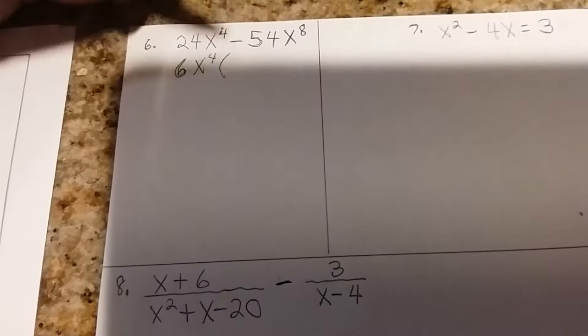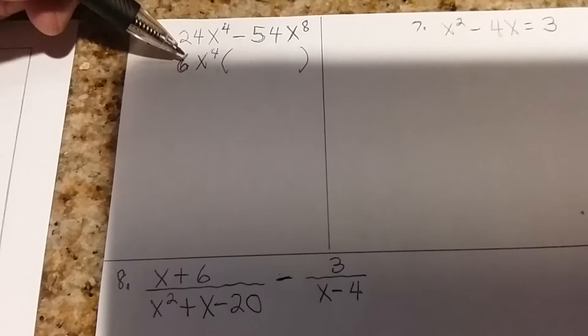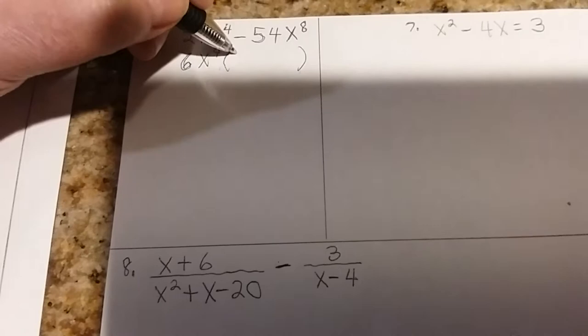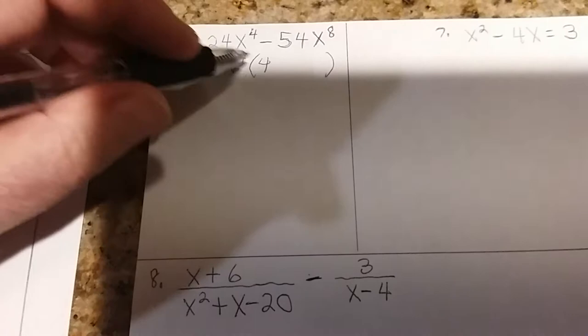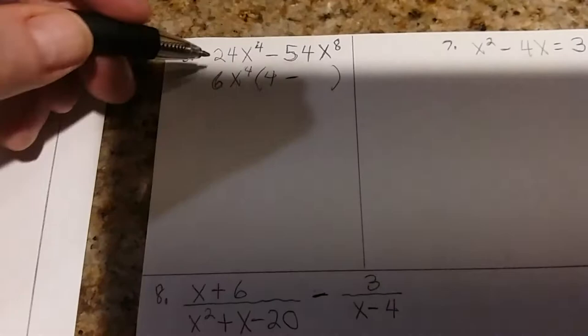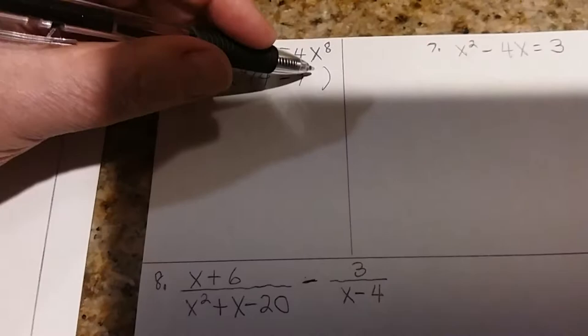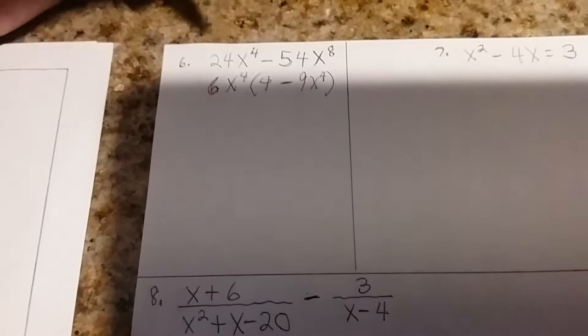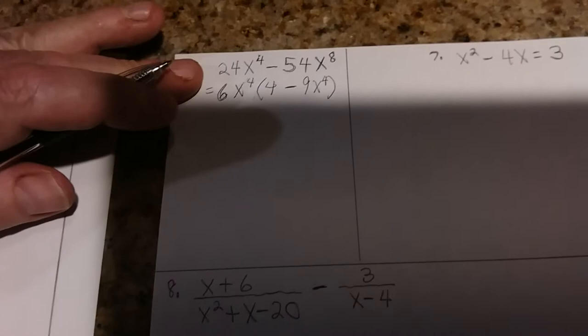Once you get the greatest common factor, you leave a parenthesis. If you want, you could divide and get the remainder. I like to do it by reverse multiplying. I just say to myself, six times what gives you 24? Six times four. x4, you don't need to write because when you multiply 6x4 times 4, you get 24x4. The minus comes down. Six times what gives you 54? Six times nine. And x4 times another x4 gives you x8 because you add the exponents. So we factored, but don't leave this as your final answer. You won't get full credit.